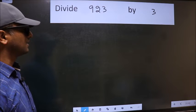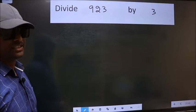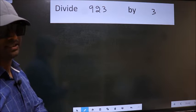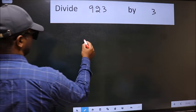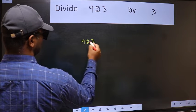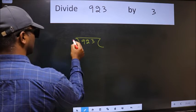Divide 923 by 3. To do this division, we should frame it in this way: 923 and 3 here.